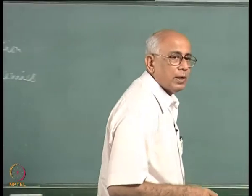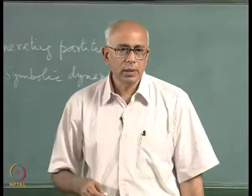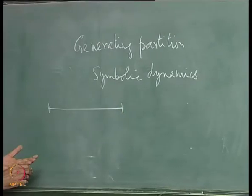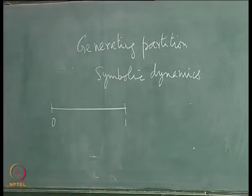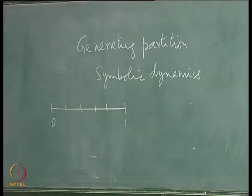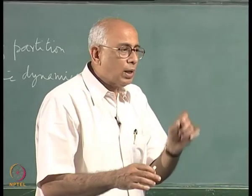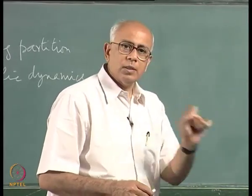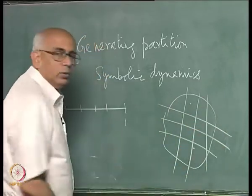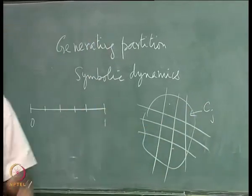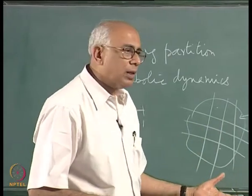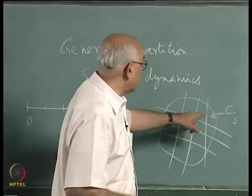Suppose we have such a partition — let us take very specific examples. Consider a one-dimensional map on the unit interval 0 to 1, broken up into little cells. At each iteration I keep track only of which cell the system is in — I coarse-grain the phase space. My resolution is not at the level of a point but of a small interval. In a multidimensional phase space I would break it up into various cells labeled c_j.